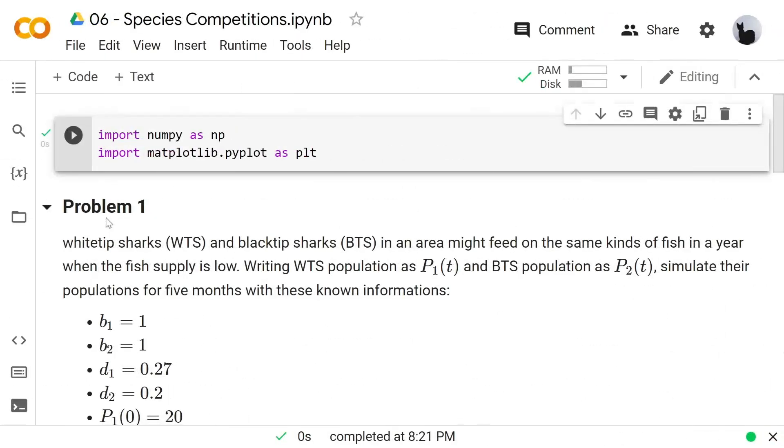Now let's continue to write down the code. Let's say we want to model the white-tip sharks and black-tip sharks populations in an area and they might feed on the same kinds of fish in a year when the fish supply is low. Writing WTS population as p1 and BTS population as p2, we want to simulate their populations for 5 months with this known information.